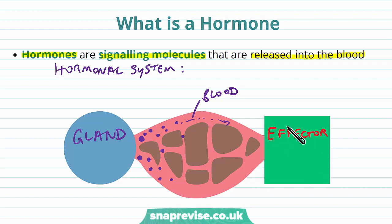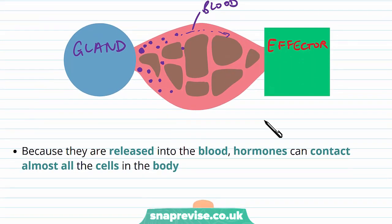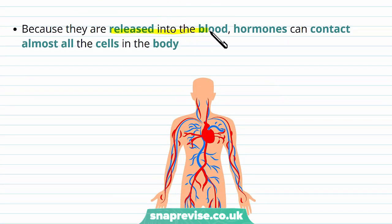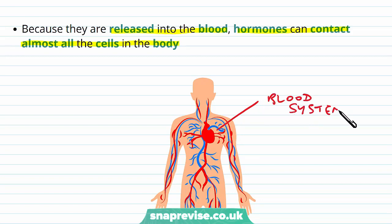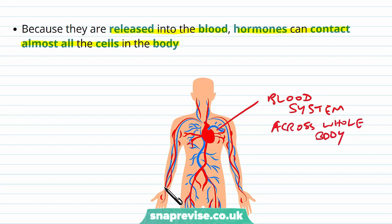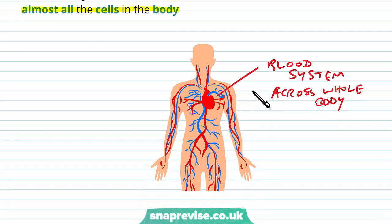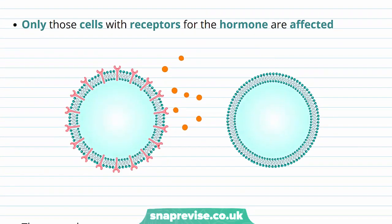The hormones tell the effector which response to coordinate. Because they get released into the blood, hormones can contact almost all of the cells in the body, since the cardiovascular system distributes blood across the whole body. The hormones in the blood don't just go straight to where they're required — they get exposed to most cells in the body, but they only act on cells which are able to respond to them.